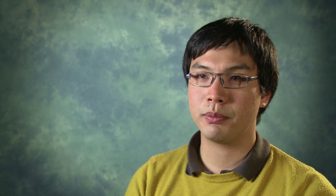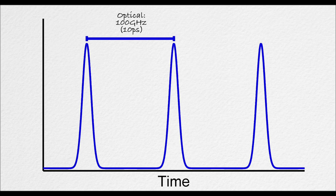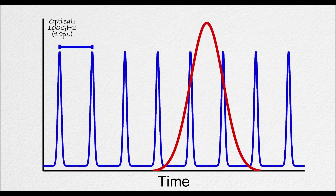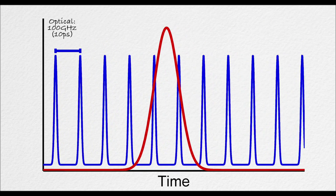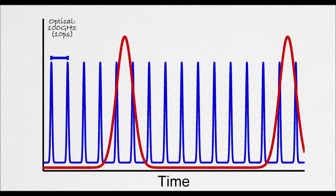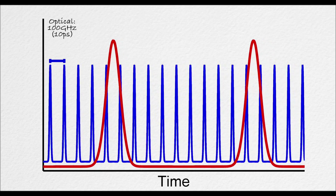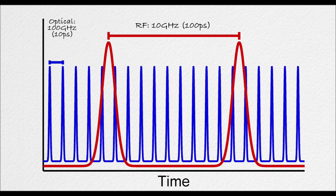As the name suggests, an optical-arbitrary signal generator is a device which will allow the user to generate optical signals with arbitrarily shaped waveforms. By using optics, we get away from the speed limitations which are imposed by electronics, and an optical-arbitrary signal generator would be expected to operate at hundreds of gigahertz as opposed to tens of gigahertz.